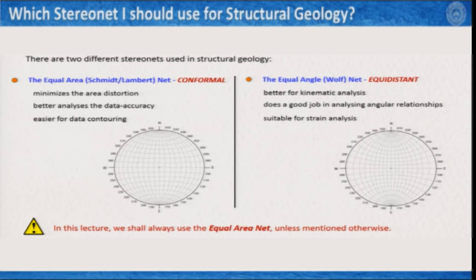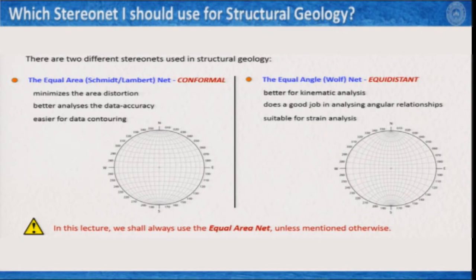In structural geology, there are two different types of stereonets that we use: equal area and equal angle. The equal area map is also known as the Schmidt-Lambert net, and the equal angle projection is also known as the Wulff projection or Wulff net. The advantage of equal area projection is that it minimizes area distortion, making it better for data accuracy analysis and easier for data contouring. The equal angle Wulff net does an excellent kinematic analysis and is suitable for strain analysis.